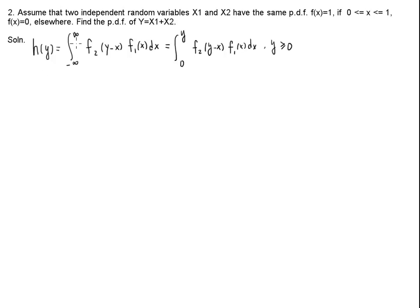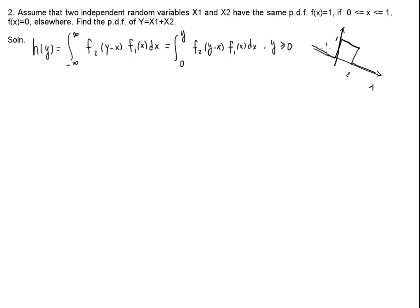Now we're going to calculate this integral. We need to be very careful because f1 has three pieces and f2 also has three pieces. We can sketch the diagram: this is x, and this is the square, and this is 1. The density function is 0, then 1, then 0 again. So this is the density function f(x) that we have.